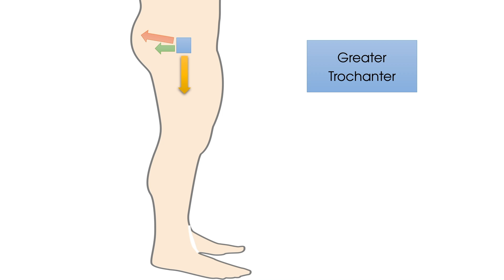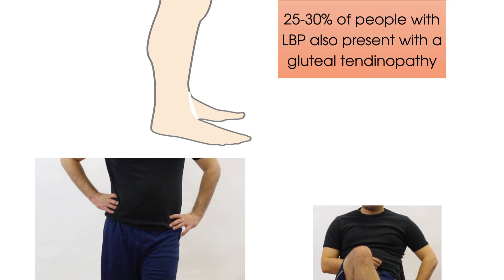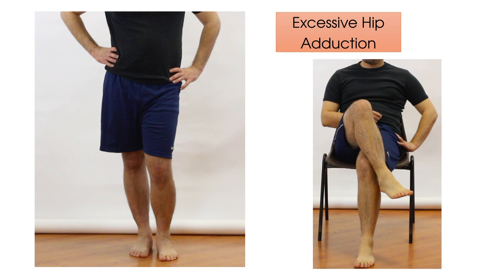It is important to remember that 25-30% of people with low back pain also present with a gluteal tendinopathy. The key driver in terms of pathophysiology of this condition is when the hip is placed in excessive adduction, which stretches and compresses the insertional gluteus medius and minimus tendons, and so this should be considered when your patient is describing their aggravating factors.